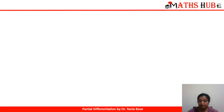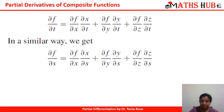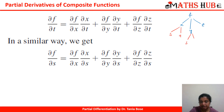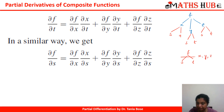Now let's see how partial derivatives come into composite functions. We have f as a function of x, y, and z; x depends on s and t; y depends on s and t; z depends on s and t. So f is finally dependent on s and t through the intermediate network of x, y, and z. In this case we can define the partial derivative of f with respect to s and the partial derivative of f with respect to t.